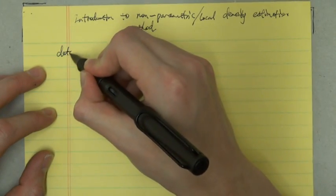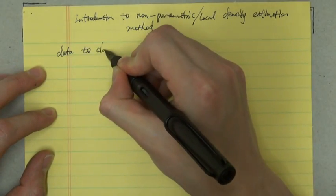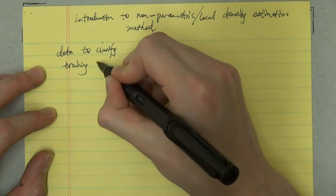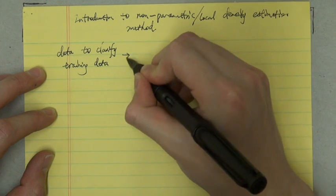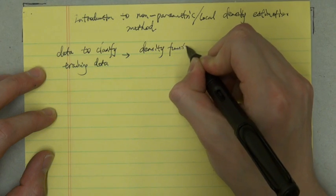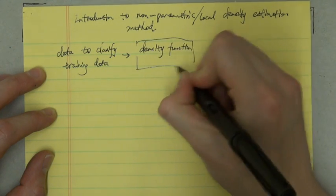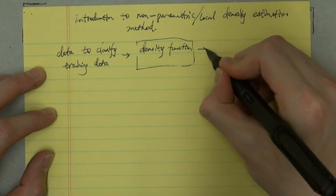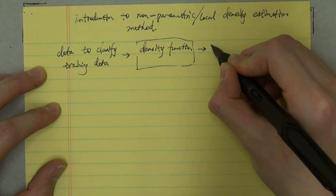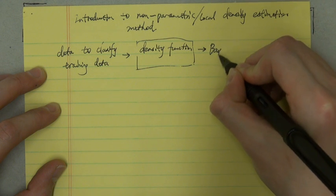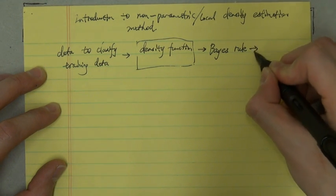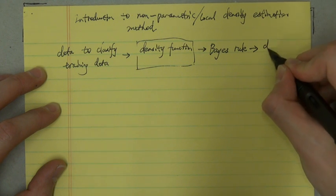First, we have the data to classify, also called the training data. And according to our density function, we can calculate their probability according to the Bayesian rules, and then we can classify this data.